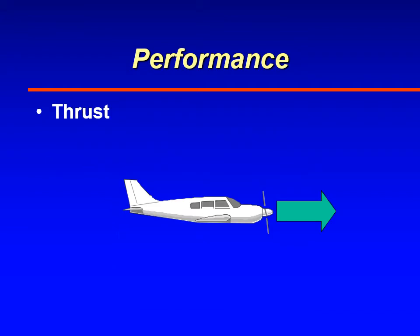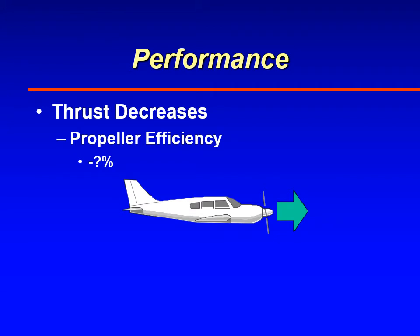First off, we're going to look at the four forces and try to estimate each one. As far as thrust, they couldn't really get a good handle on how thrust was affected. They assumed that it was rather small. The propellers were de-iced, but there was still some accumulation of ice on the propellers regardless. That is a big question mark, though they're assuming it was a small factor.